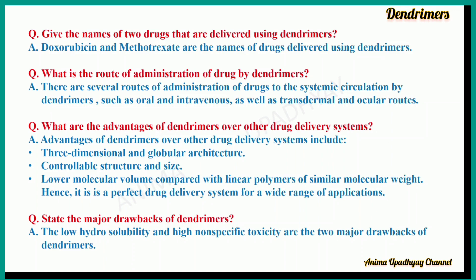What are the advantages of dendrimers over other drug delivery systems? The advantages include three-dimensional and globular architecture, controllable structure and size, and lower molecular volume compared with linear polymers of similar molecular weight. Hence, it is a perfect drug delivery system for a wide range of applications.